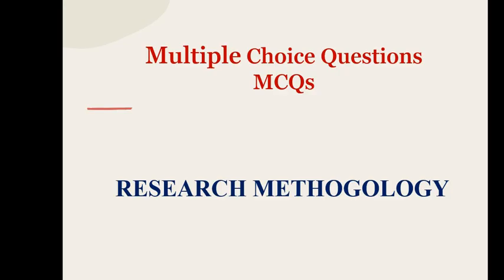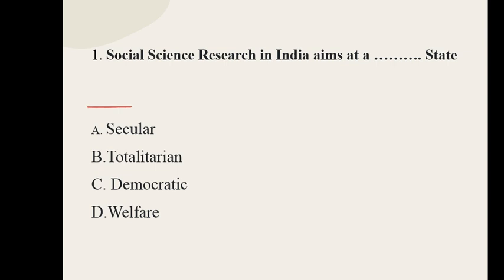Moving on to the topic of discussion today. Today we are going to talk about 25 more MCQs on research methodology. The first question is: Social science research in India aims at a dash state. The options are: secular, totalitarian, democratic, welfare.